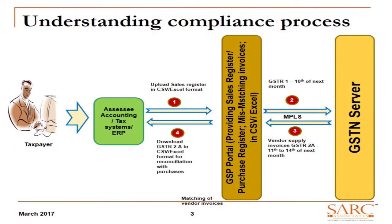Essentially what happens is a taxpayer will upload his transactions — sales data, sales invoices — on GSPs, which then flow to the GSTN server. These sales invoices are to be uploaded by the 10th of the next month. For example, for the month of July — since the government is targeting to roll out GST from July — whatever sales invoices you have raised have to be uploaded by the 10th of August.